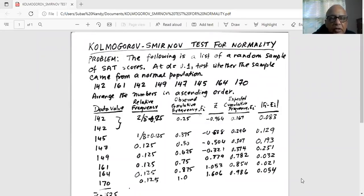Kolmogorov-Smirnov test for normality. Problem: the following is a list of random sample of SAT scores. At alpha equal to 0.1, test whether the sample came from a normal population.